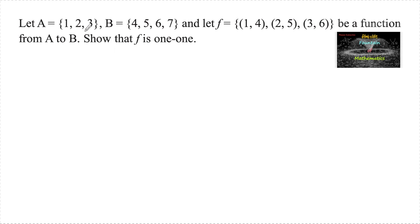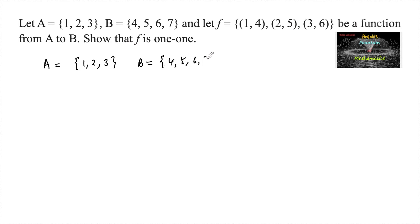Set A is equal to {1, 2, 3}, set B is equal to {4, 5, 6, 7}, and a mapping f is equal to {(1,4), (2,5), (3,6)}. Given that f is a function from A to B, show that f is one-to-one.